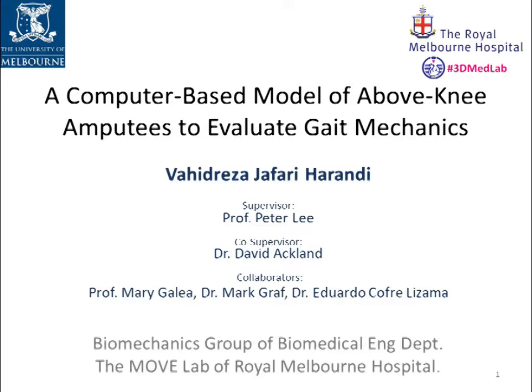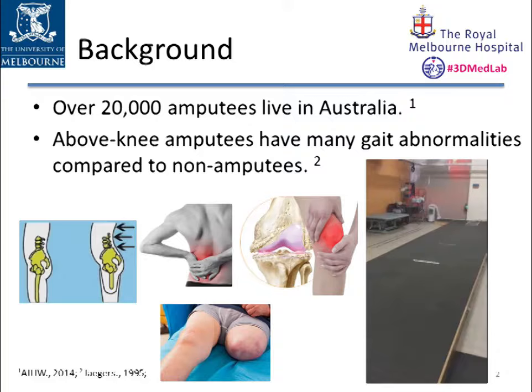Looking inside medical reports, there is an increasing number of people with lower limb amputations resulting from traumatic vascular accidents and congenital causes. For example, in this country over 20,000 amputees are living, and in the US more than 1.7 million amputees are living, which is expected to more than double by the year 2050.